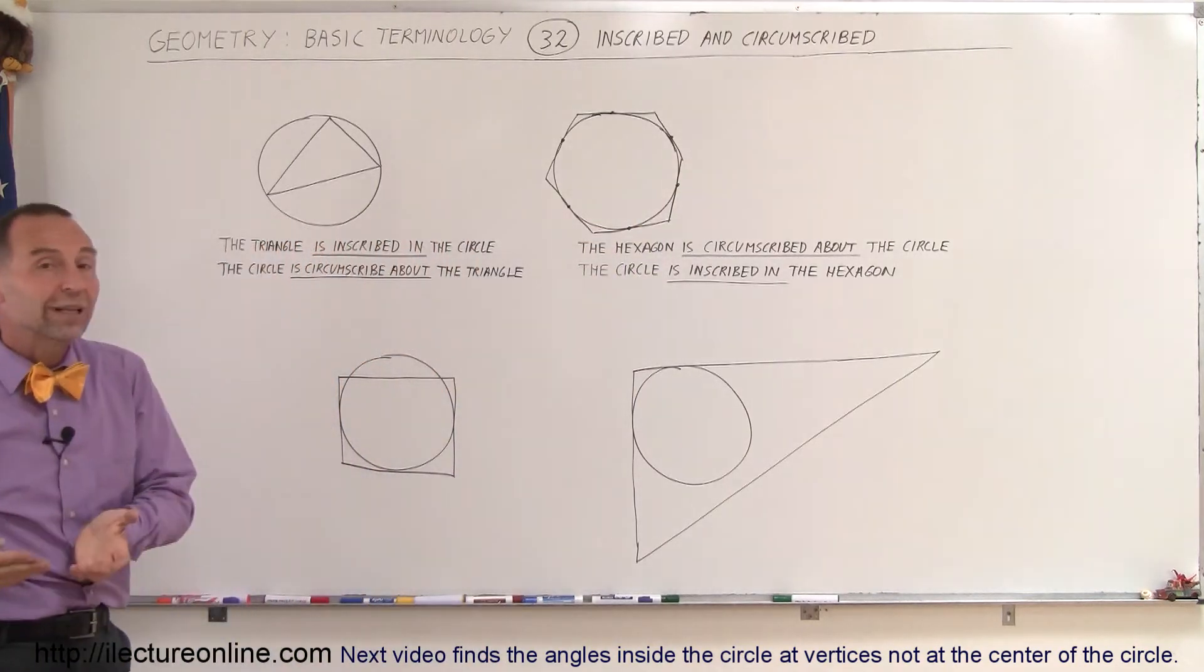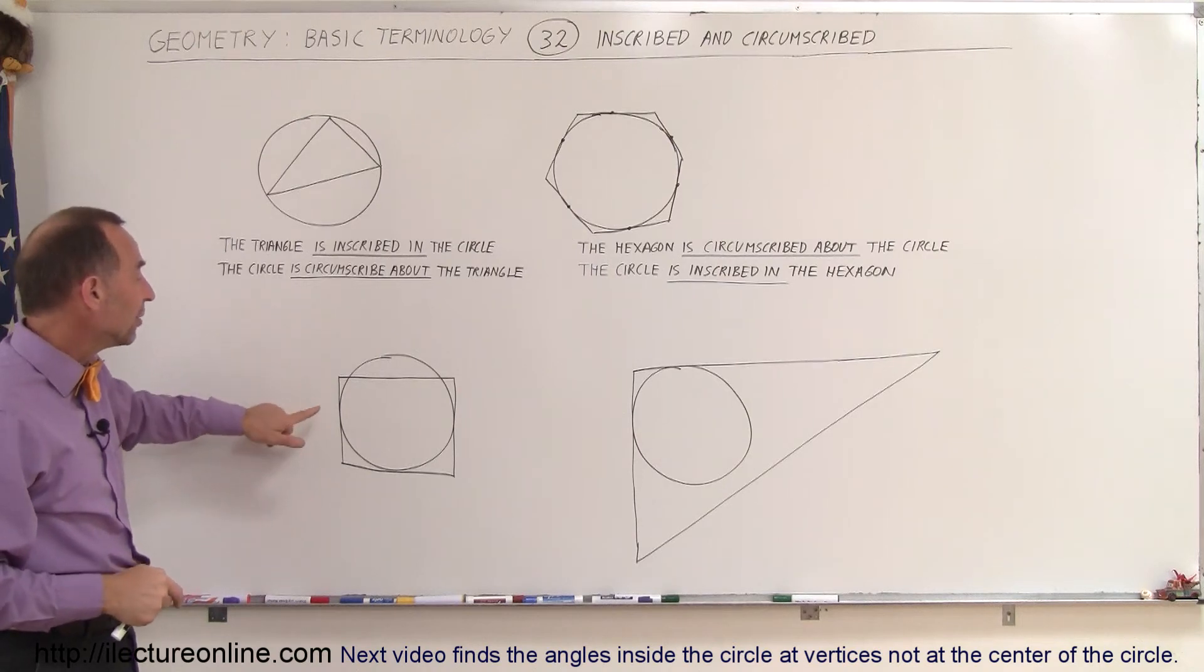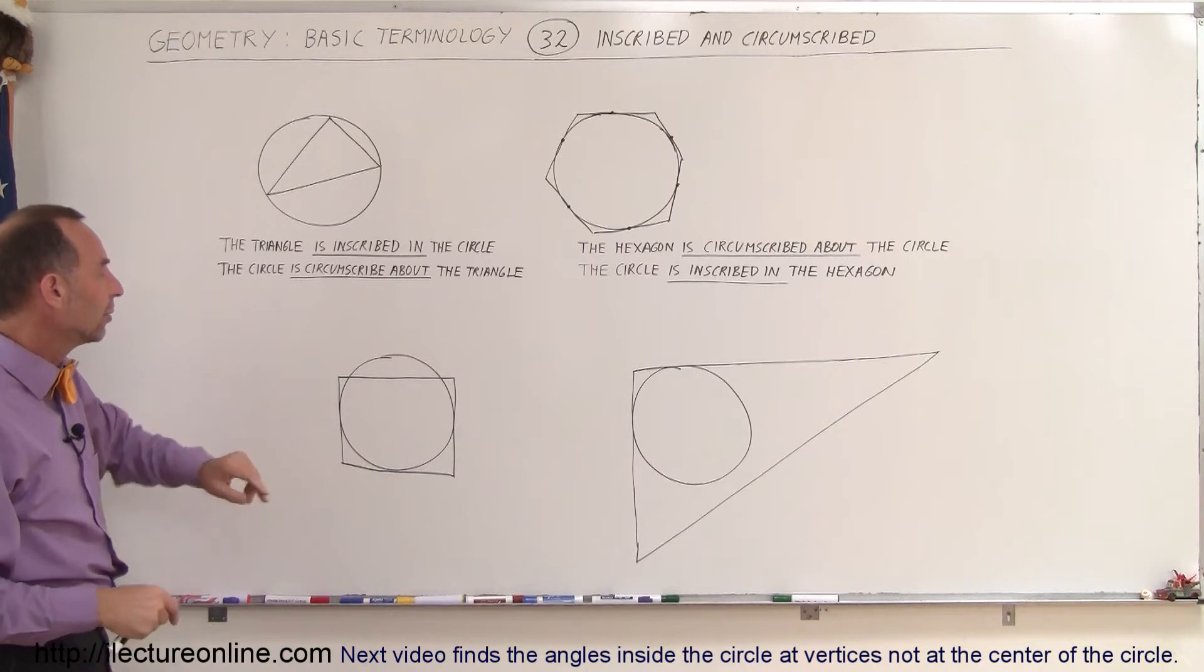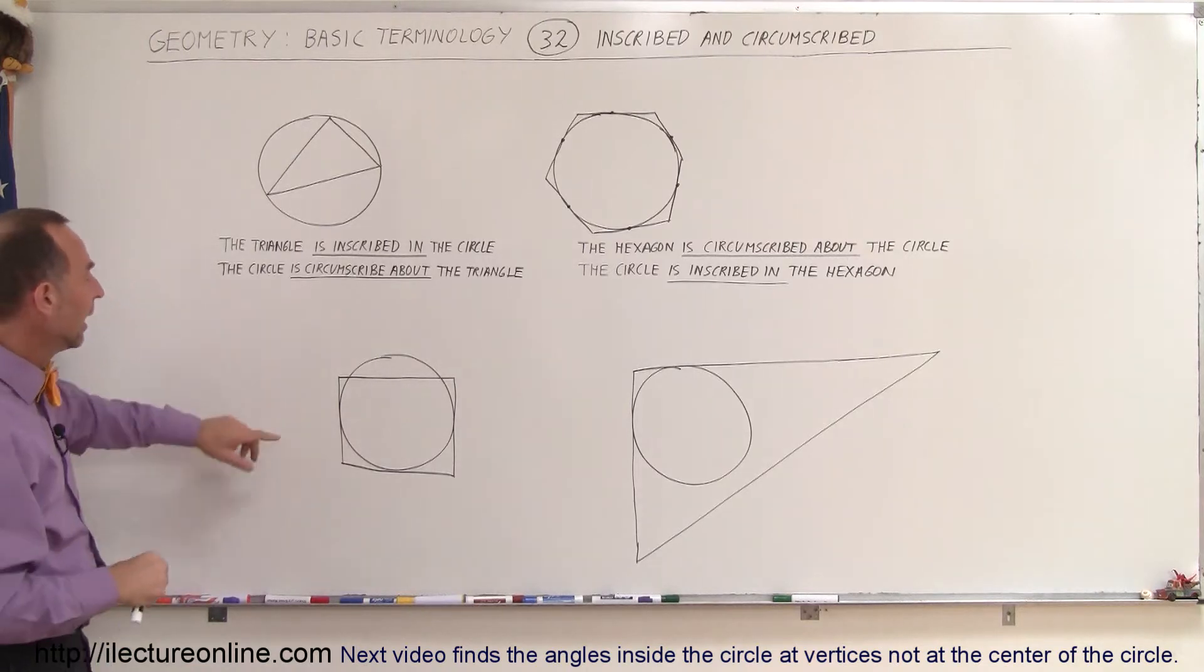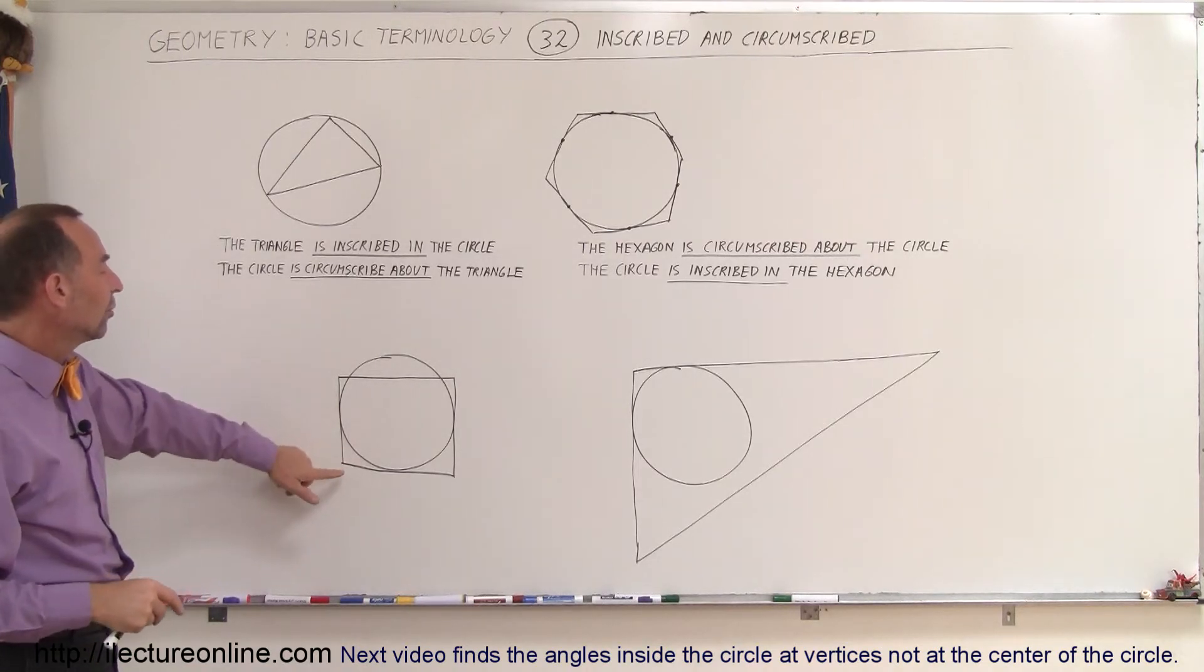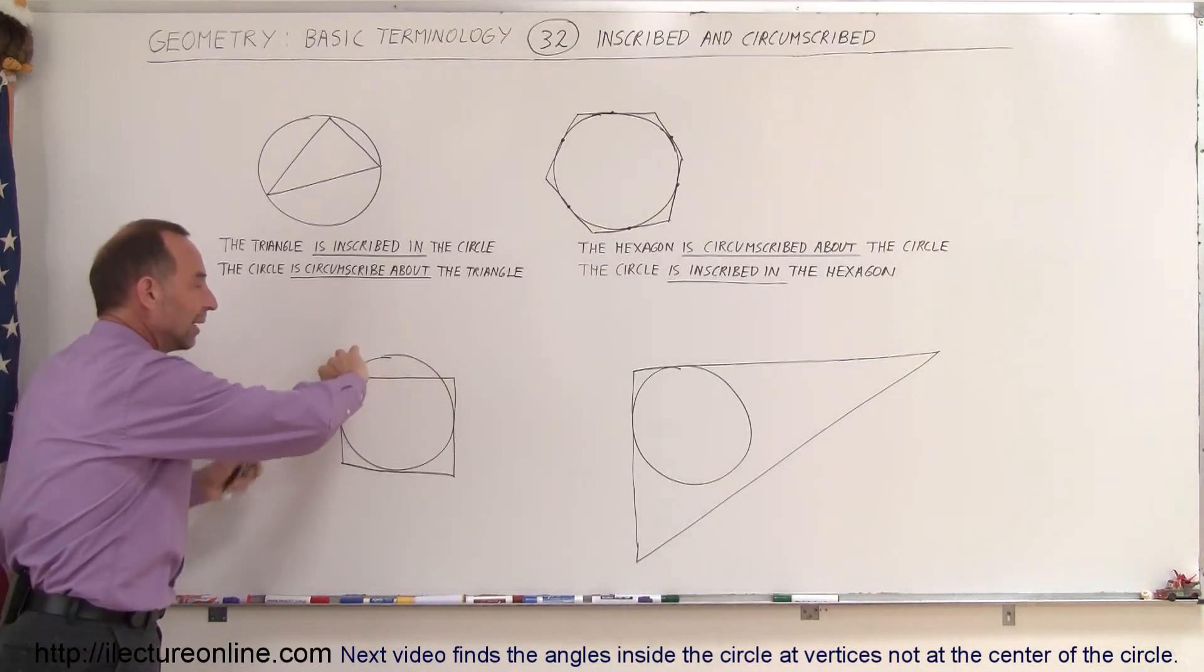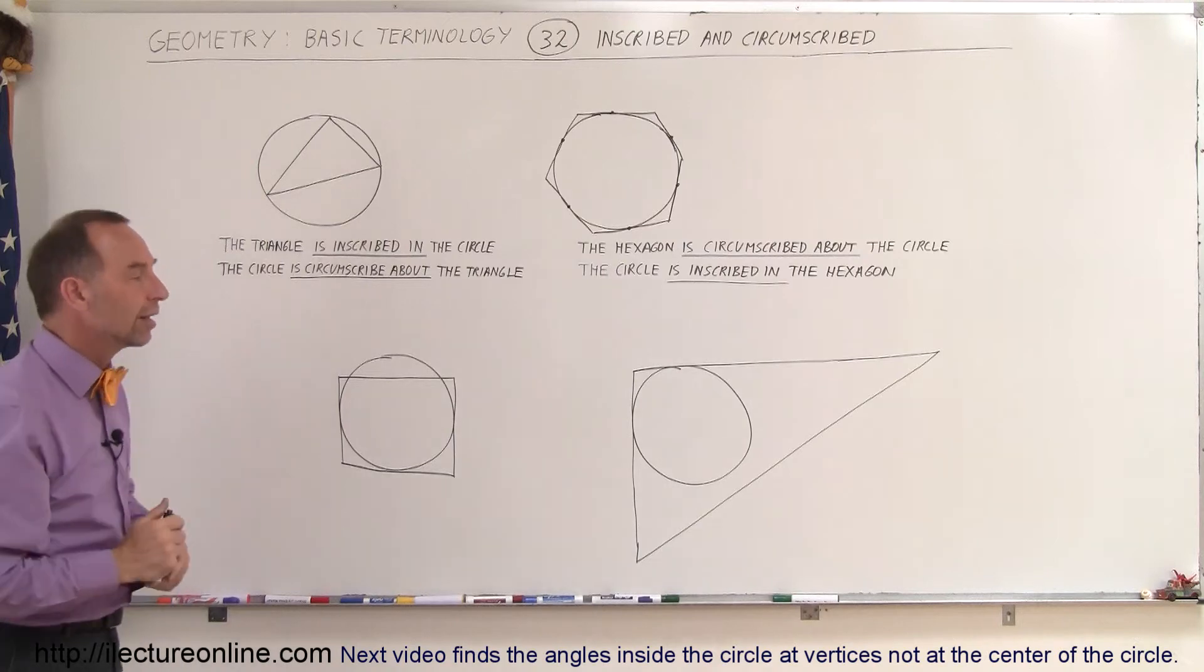Now, examples where that is not the case. Here we can see that neither is the circle inscribed in the rectangle. And we can also not say that the rectangle is circumscribed about the triangle because it doesn't completely have the triangle inside of it.